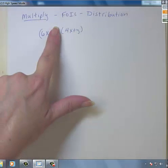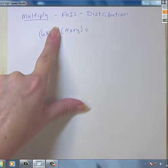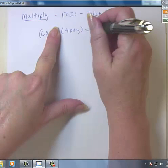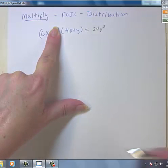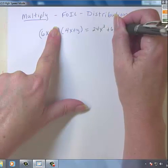So if we take the first term, we are going to get 6x times 4x will get us 24x squared, and 6x times y will get us plus 6xy.